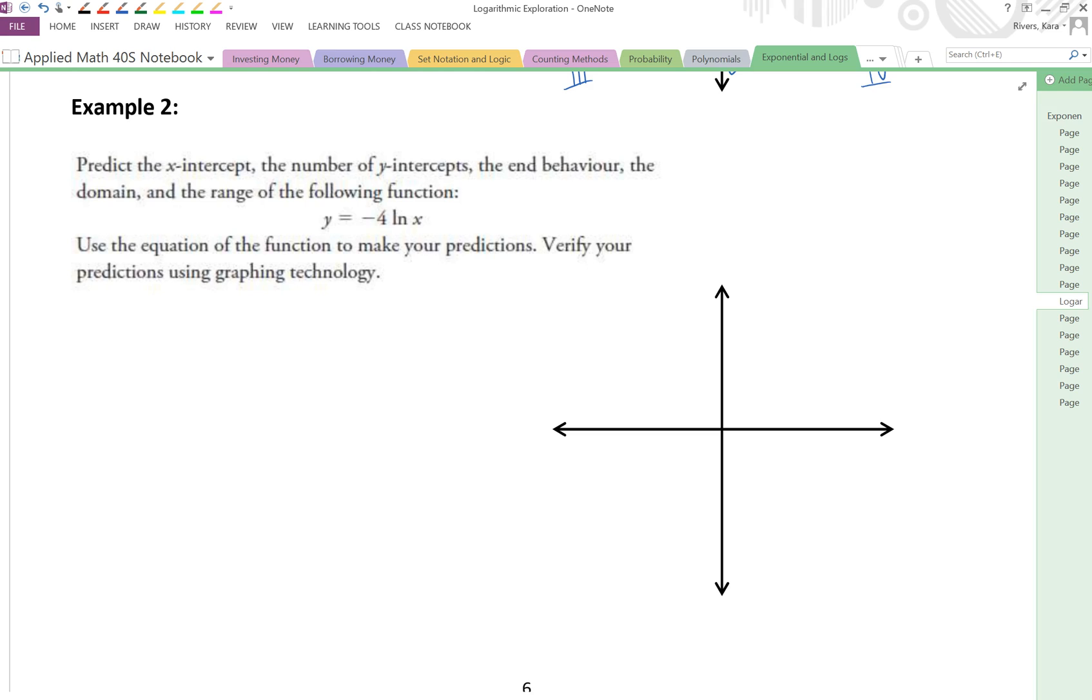So it's ln, all that means is it's still log, behaves the same, all the behaviors are the same, and you would have seen that in the investigation, but the base is e. We can see in this one, though, we've got a negative 4. So let's take a look at those characteristics.